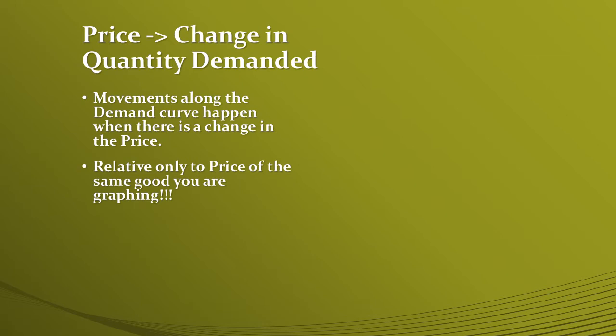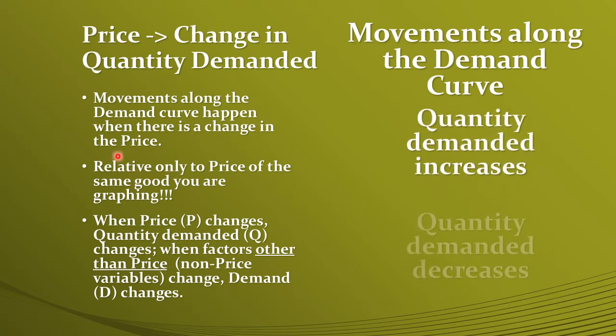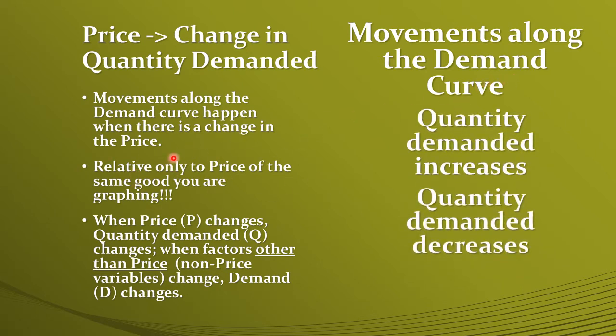This movement will only occur if the price of the specific product we are talking about changes. If we're talking about Coke, we're talking about the price of Coke. If we're talking about Oreo cookies, we talk about the price of Oreo cookies. Movements along the demand curve are only relative to the price of the same good you are graphing.